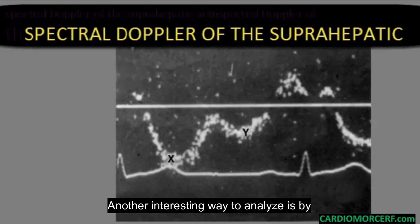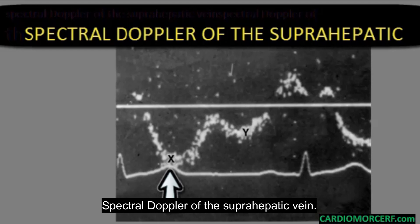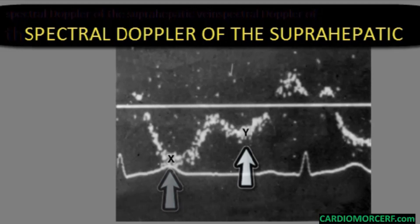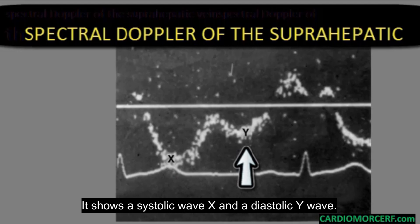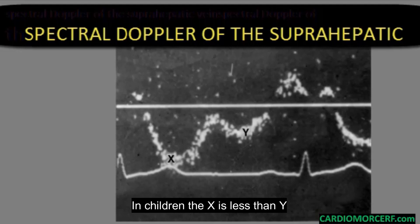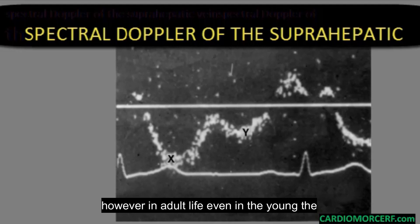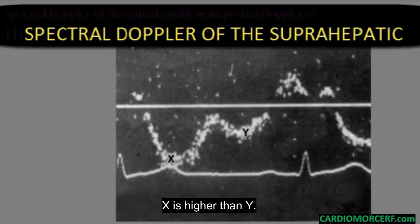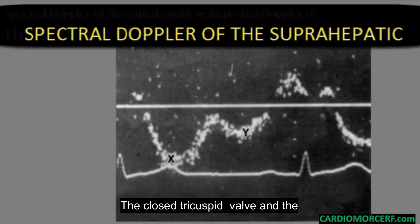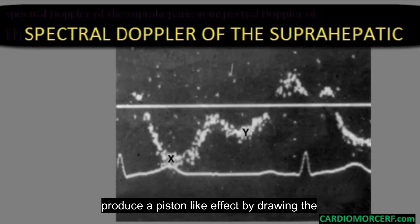Another interesting way to analyze right ventricular function is by spectral Doppler of the suprahepatic vein. It shows a systolic X wave and a diastolic Y wave. In children, the X is less than Y; however, in adult life, even in the young, the X is higher than Y. What produces a big X wave? The closed tricuspid valve and the valve annulus, when pulled toward the tip, produce a piston-like effect by drawing blood into the right atrium.